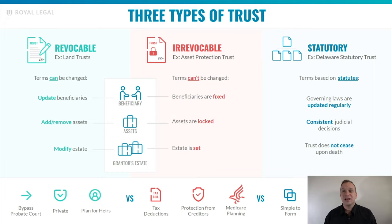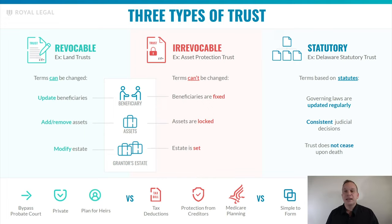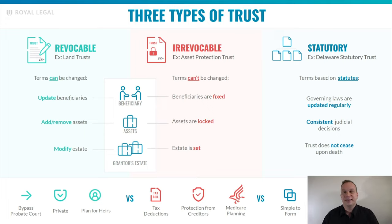Irrevocable trusts can also be useful in states where LLCs might not be a great route, like California and Florida, where the LLC laws are either not providing enough protection or are just incredibly expensive. In these cases, an irrevocable trust can be used for the most basic level of protections. You'll also find irrevocable trusts used in Medicare planning, where the government looks at how many assets you have when you draw on governmental benefits. With proper use of irrevocable trusts and Medicare planning, you're able to have the government pay all of your medical expenses from day one.